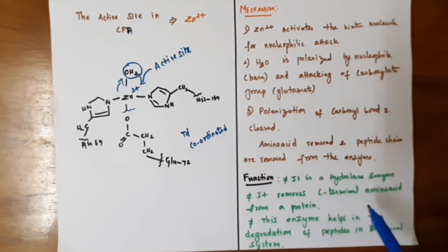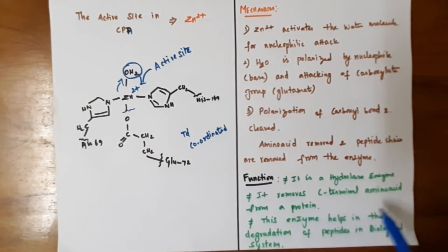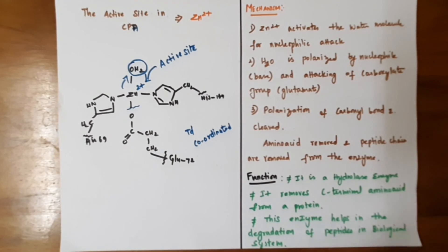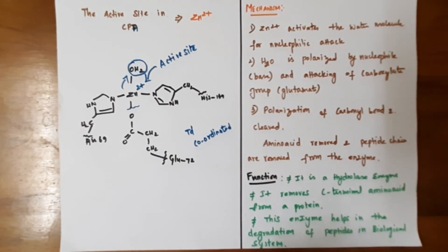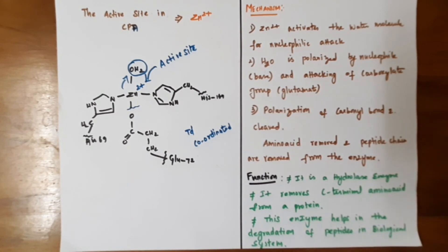In summary, carboxypeptidase is a hydrolysis enzyme used to hydrolyze peptide bonds. It removes the C-terminal amino acid from a protein molecule and is involved in the degradation of peptides in the biological system. This process mainly takes place in the duodenum of the human body — specifically in the small intestine. Thanks for watching.